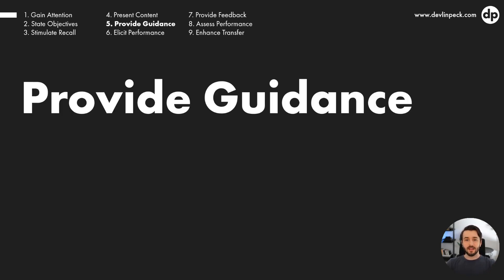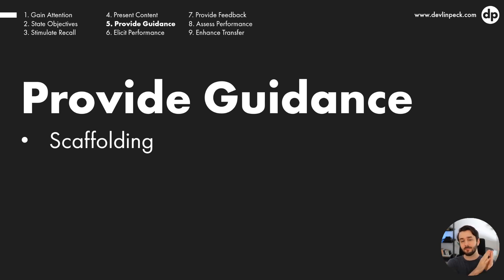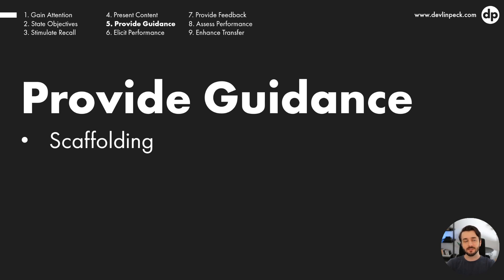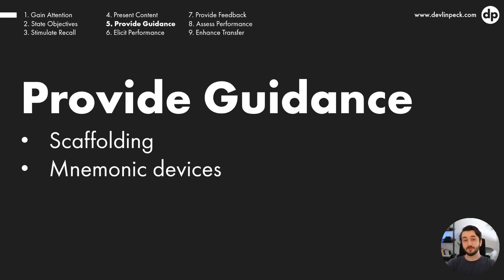The fifth event is to provide guidance. A lot of designers get confused with this part, but it's really about scaffolding. In the beginning of the experience, you provide more guidance — you help people see the reasoning behind certain answers or approaches, give them practice questions that start off more simple, and guide them to the right answer. Mnemonic devices are another example, like PEMDAS — 'Please Excuse My Dear Aunt Sally' — for learning the order of operations in math.